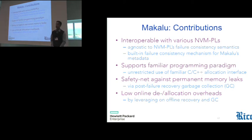So this is where our work steps in. So we provide out-of-the-box interoperability with most programming libraries that we have seen. And one of the reasons why we can do this is because we are agnostic to any failure consistency semantics. And we can be agnostic because we have a built-in failure consistency for our internal metadata for the allocator. And we also support unrestricted use of familiar C interfaces such as malloc and free throughout the program. And one of the reasons why we can again do that is because we are detached from the failure consistency semantics of the individual programming library.